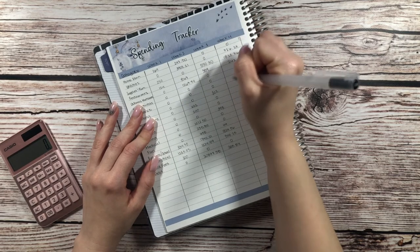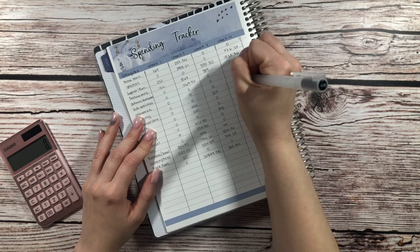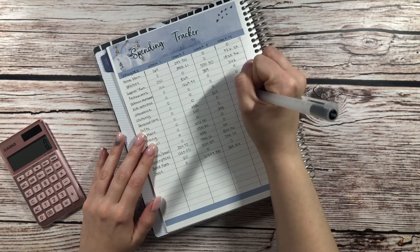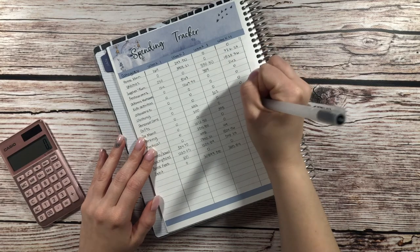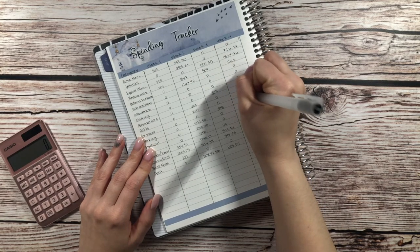Restaurants, $242.00. Adams, Montcasa, zero. Activities, zero. Allowance, zero. Clothing, zero. Personal care, zero. Gifts, $584.50.